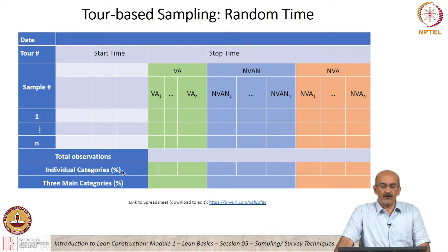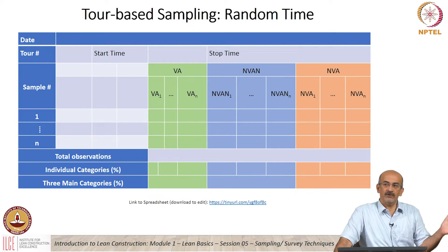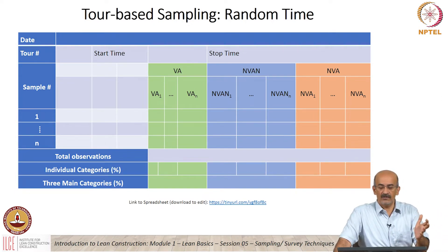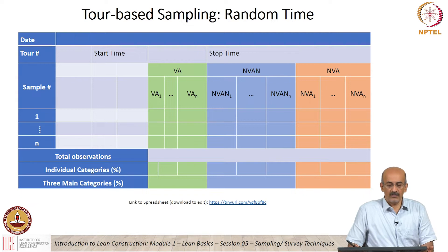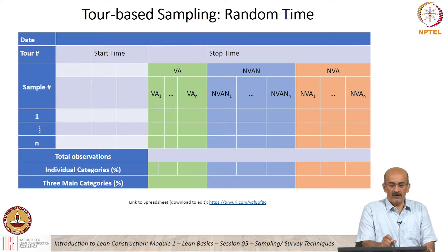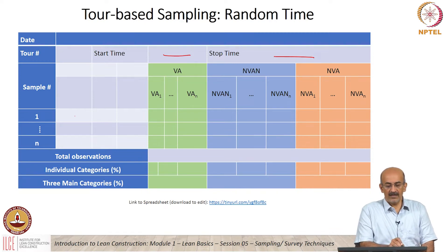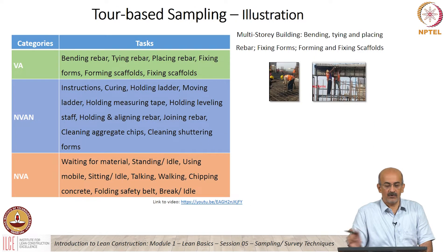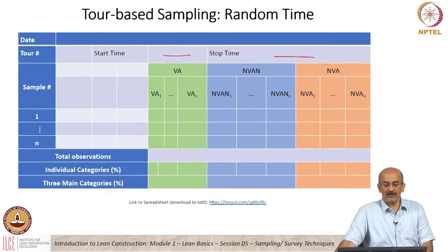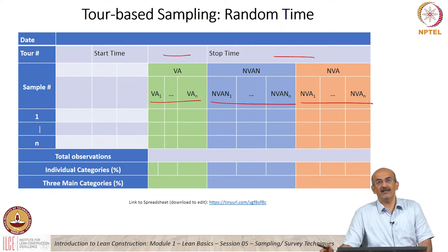We are now looking at the three methods: there is a random approach, a periodic approach, and a continuous approach. This is the format they used — again, only a suggested format. In this format they have a start time and end time of when the sampling is done. For each sample, VA1 might correspond to bending rebar, VA2 to tying rebar. These are all the value added, non-value added, and non-value added but necessary categories.